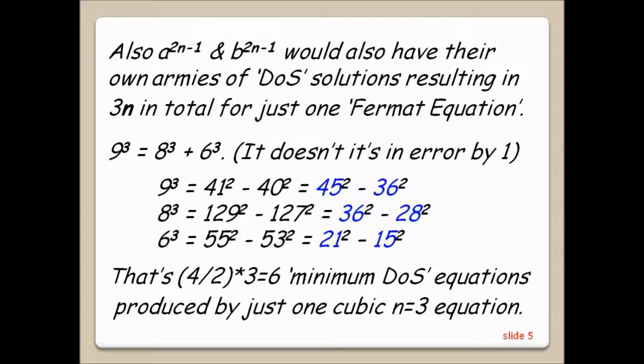Also, a to the 2n minus 1 and b to the 2n minus 1 would also have their own armies of difference of square solutions resulting in 3n in total for just one Fermat equation.